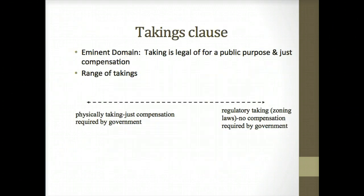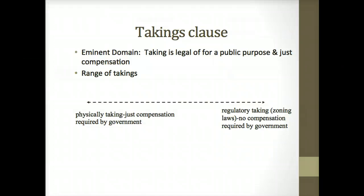I wanted to show you just a little bit about the range of takings. Eminent domain is the power of the government to take private property for a public purpose if it provides just compensation. The kinds of takings range from physically taking the property — that is, tearing it down — all the way to a regulatory taking, where the government doesn't physically use or occupy the land but adopts zoning laws that deprive the owner of the use of the land. And depending on how that deprivation occurs and how much limit is placed on the owner's use of the land, a regulatory taking can be considered a taking just like a physical taking. Those are the key points I wanted to talk about for those concepts.